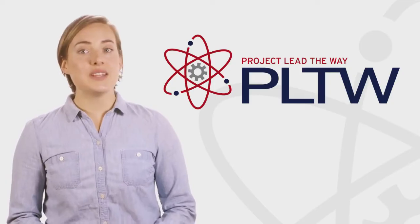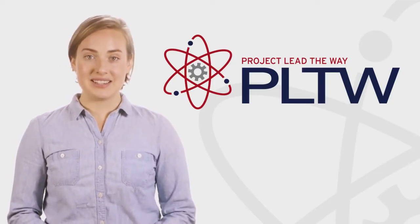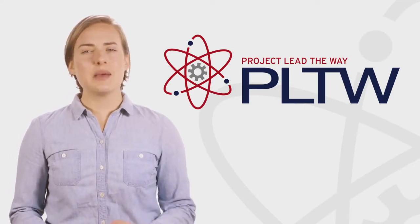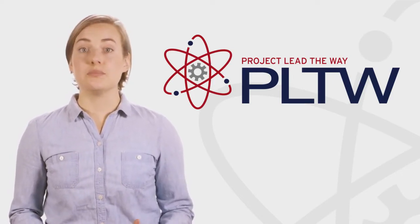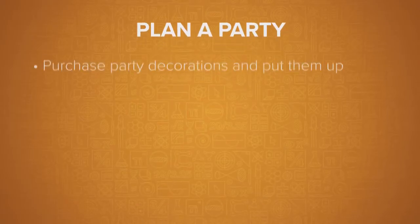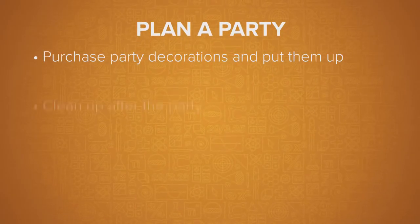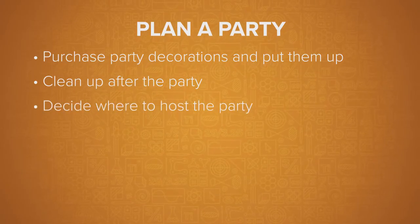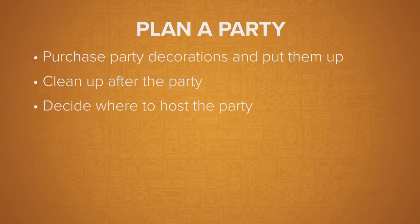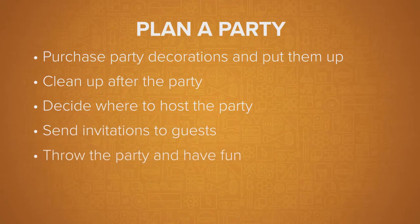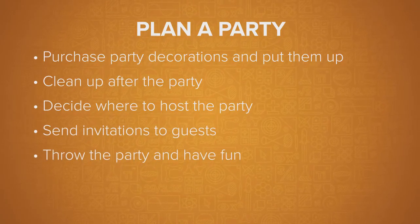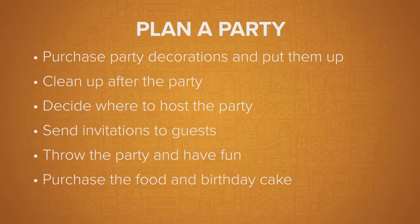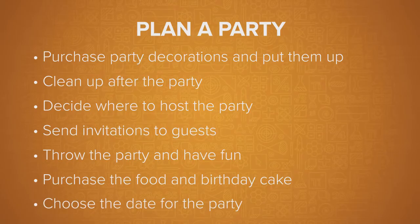First, we need to identify a task to complete. Let's write an algorithm to plan a birthday party for your best friend. Take a moment to think about what you need to do to plan a party. You'll need to purchase party decorations and put them up. That means you'll have to clean up after the party. You'll need to decide where to host the party, send invitations to the guests, then throw the party and have fun. Don't forget about the food. You'll have to purchase the food and birthday cake and choose the date for the party.